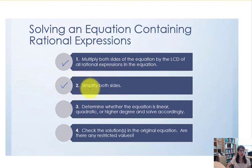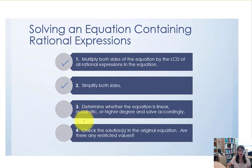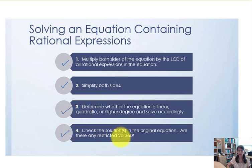In step two we'll simplify both sides of the equation. In step three we'll determine whether the equation is linear, quadratic, or higher degree and solve accordingly — so if it is quadratic we might need to use factoring. In step four we're going to check our solutions in the original equation because there may be restricted values.